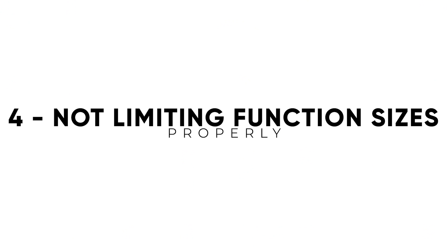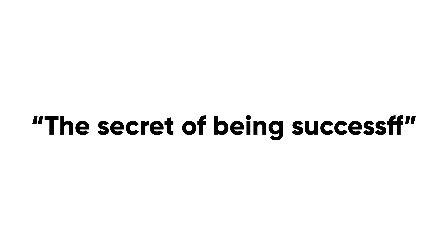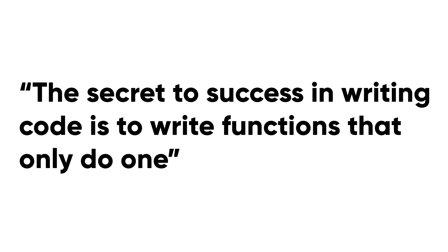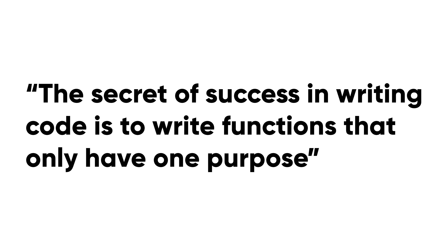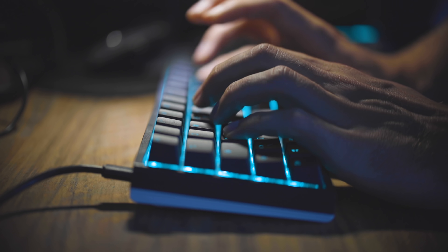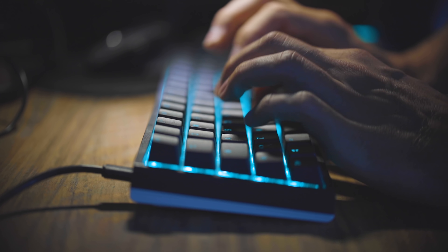Essentially, a function should do one thing. The secret to success in writing code is having functions that only have one purpose. If you describe what your function does, you should be able to do it without using AND or OR. Writing comments before actually writing my functions really helped me write better and faster code, because I've already written out what the function is supposed to do — so I know what it is and is not supposed to do, meaning all that's left is just implementing it.